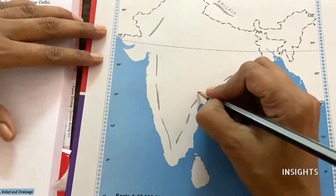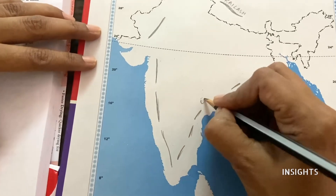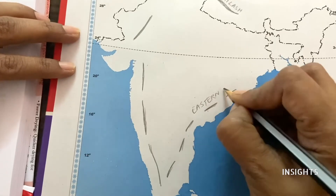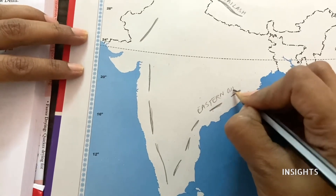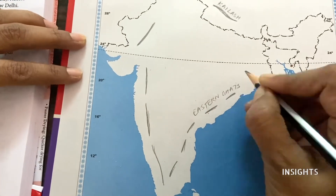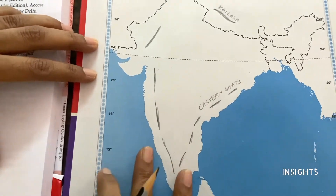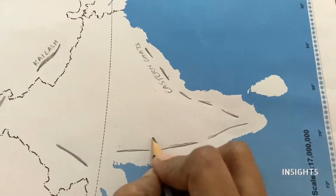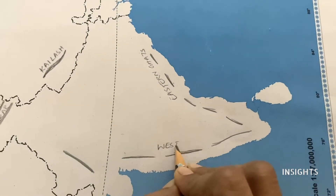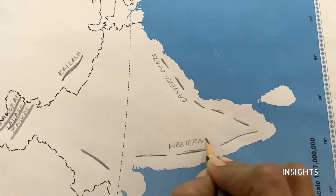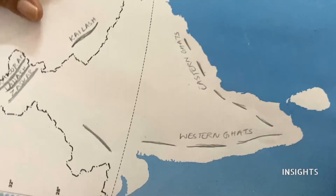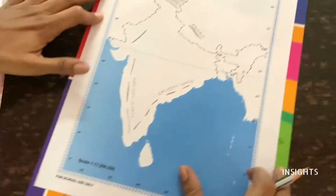So let's name them now — Eastern Ghats and Western Ghats. Let's turn the book and write them easily. And let's also name the Aravali Range.